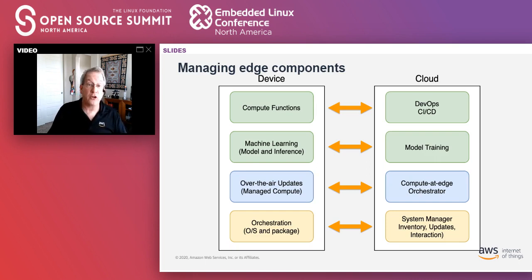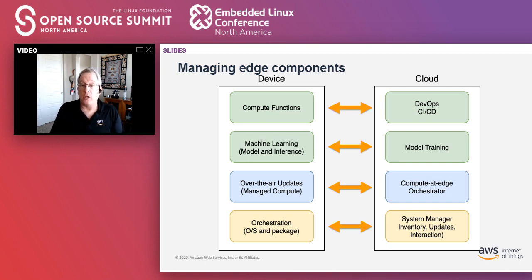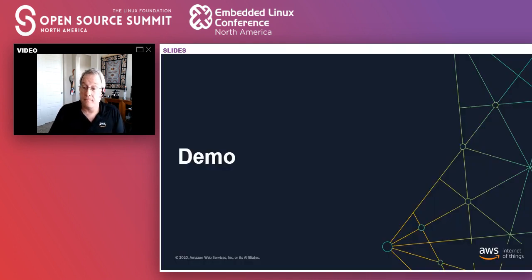There are different types of layers we can map from the edge device back into cloud capabilities, which will help with orchestration and automation of everything from the operating system all the way up through machine learning models and compute functions.